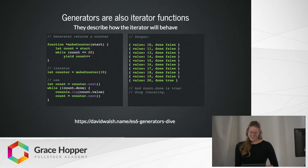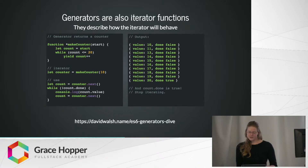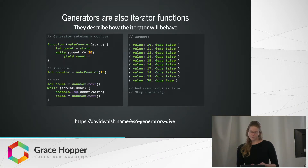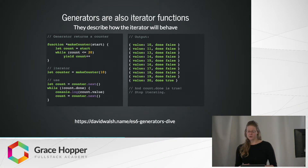Let's move on to generator functions. A generator is also an iterator function — they return an iterator object. But generators do not directly return an iterator literal. Instead, now that we have generator code which defines how the iterator will behave, the iterator is made for us automagically behind the scenes. On the left, we have an asterisk that marks makeCounter as a generator function. And we can read: let count equals start, and while count is less than or equal to 20, yield the count. The yield keyword marks when the iterator should be returning a value to the code that runs the counter. This is what makes it seem like the generator code can pause and resume, which is pretty cool.